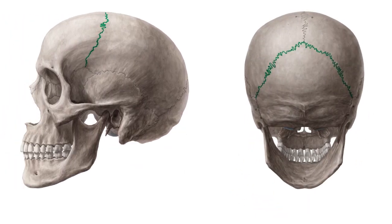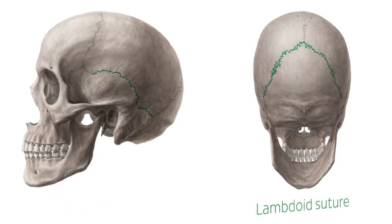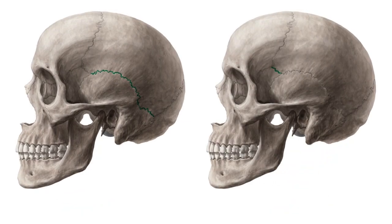Apart from its opposite counterpart, each parietal bone is surrounded by four other bones. Anteriorly, it borders with the frontal bone at the coronal suture. Laterally, it comes in contact with the temporal bone at the squamous suture.